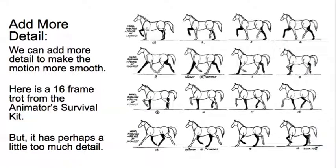Once you've got the basic trot working, you can add more detail. This is a trot cycle from the Animator's Survival Kit. It works very well, but it's perhaps a little bit too detailed for our purposes because there's an awful lot of information here, an awful lot of in-betweens. Anyway, once you've got the basic trot working, you can add in the detail.